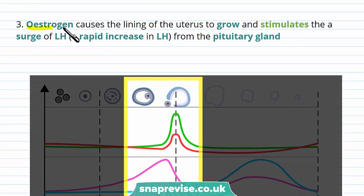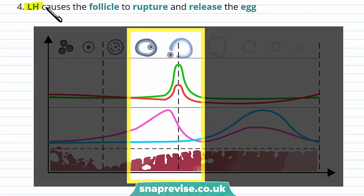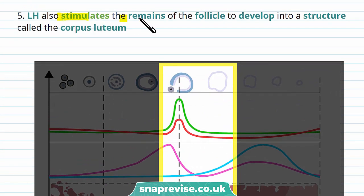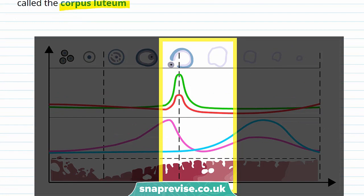After this, estrogen causes the lining of the uterus to grow and stimulates a surge — a rapid increase — in LH from the pituitary gland in the brain. So as estrogen increases, LH levels also increase. The spike in LH causes the follicle to rupture and release the egg. LH also stimulates the remains of the follicle to develop into a structure called the corpus luteum, which you can see developing here.